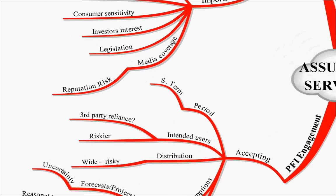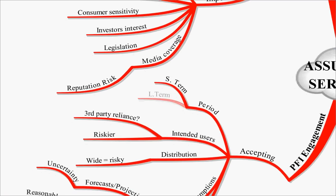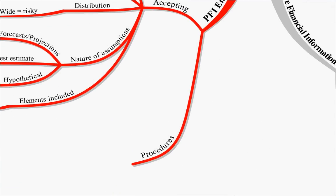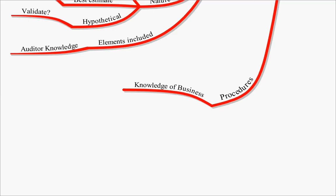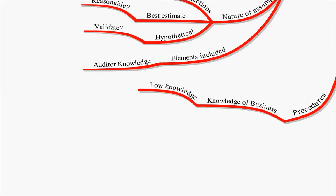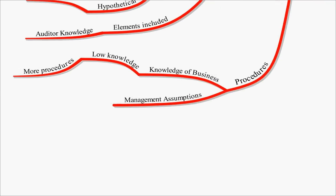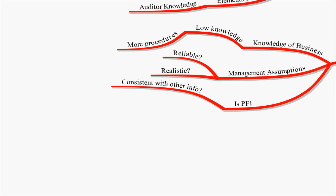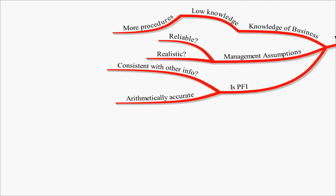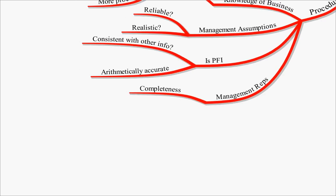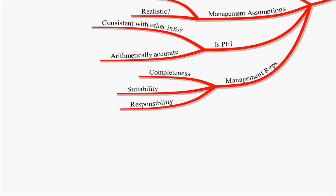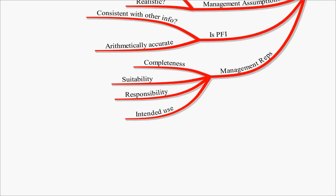You also have to look at the period involved. If it's short-term, that's much more easy to predict, but if it's over a long-term period, the predictions are going to be less reliable. When looking at PFI engagements, you need to really understand the business and if you've got low knowledge, you'll have to do more procedures. You'll need to look at the management assumptions - are they reliable and realistic? Is the prospective financial information consistent with all the other information you know about the business, and is it arithmetically accurate - absolutely crucial. Get management representations for completeness, to make sure they've given you all the information required, that the assumptions made are suitable, and that they have taken responsibility for actually preparing the prospective financial information. Also, you need to know what the intended use is for the information.